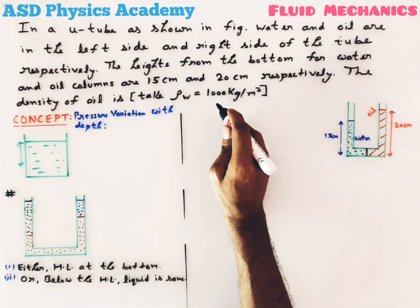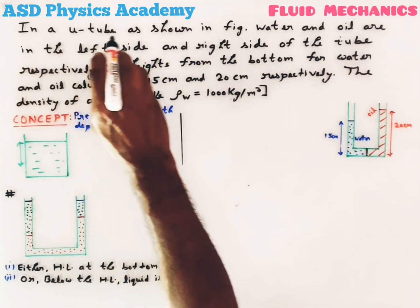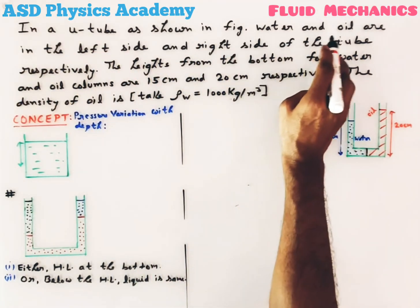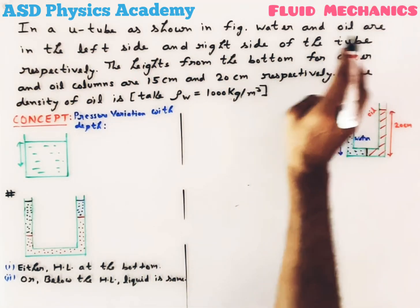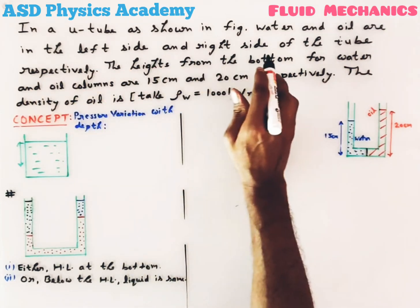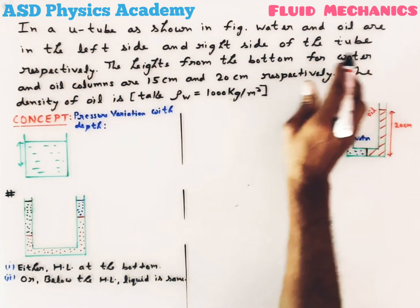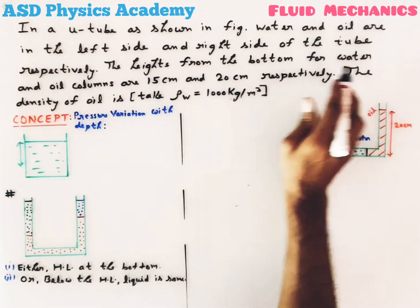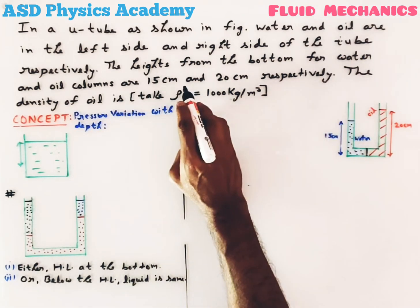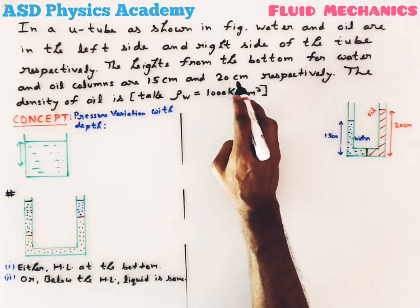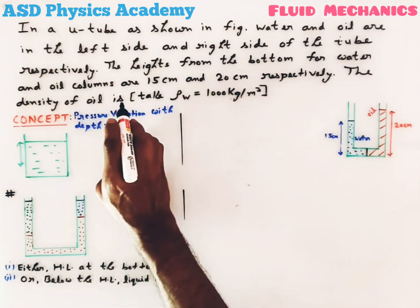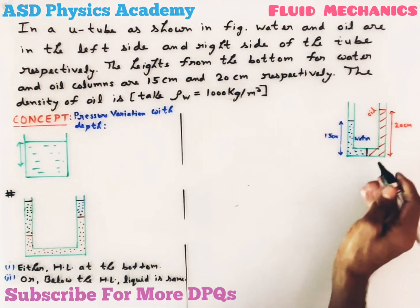Now let's see today's question. In a U-tube, as shown in the figure, water and oil are on the left side and right side of the tube respectively. The heights from the bottom for water and oil columns are 15 centimeters and 20 centimeters respectively. We have to find the density of oil.